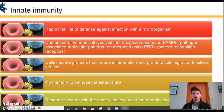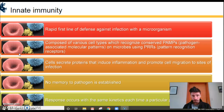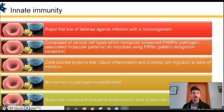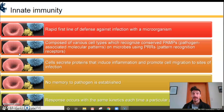The innate immune system itself is nonspecific — it cannot recognize the flu virus or Staphylococcus aureus in particular. Innate immune system cells rely on pattern recognition receptors, or PRRs, which recognize patterns on pathogens called pathogen-associated molecular patterns, or PAMPs. So we have PRRs which recognize PAMPs.